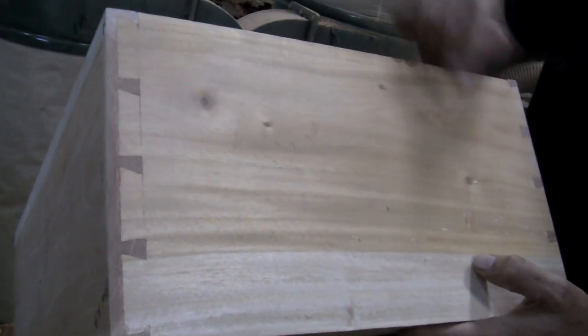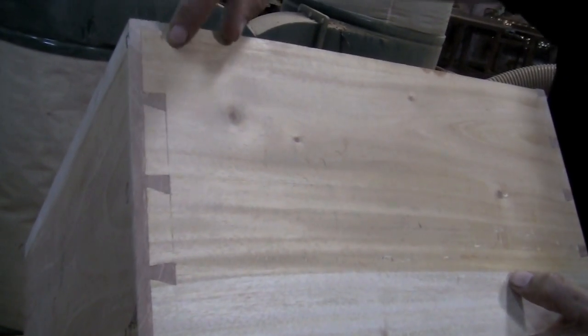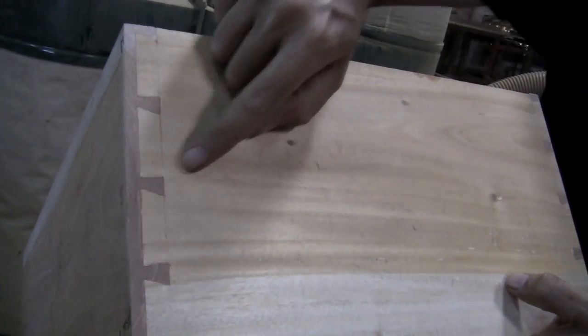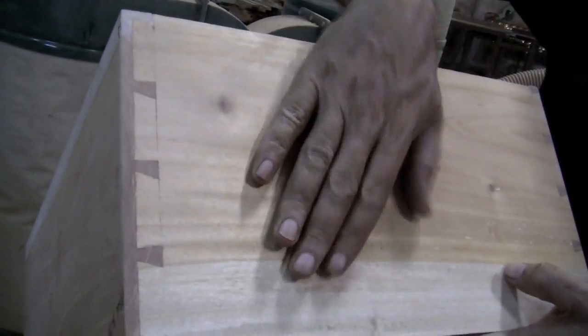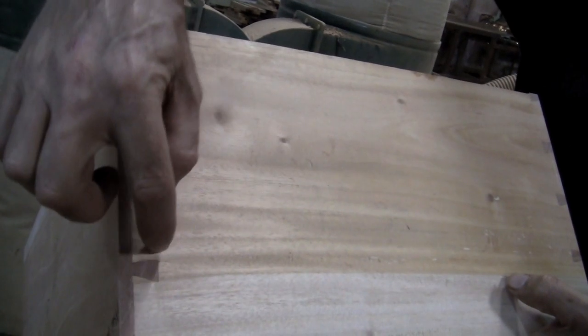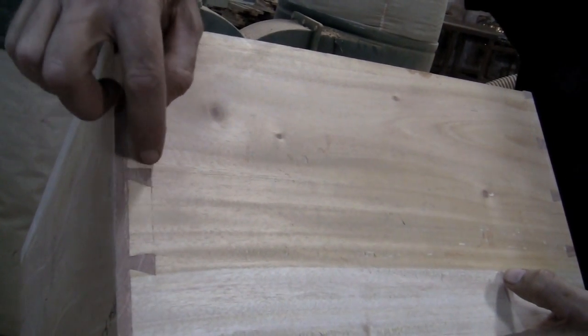The way we make this joint very accurately is we cut these tails onto the side pieces first, and then we position the wood over the end and scribe around them to get the position for the pins.